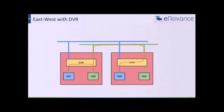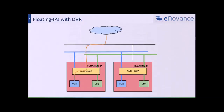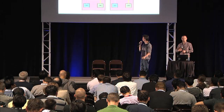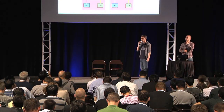With DVR, a DVR instance is started on each compute node, so the traffic will go through each instance of the DVR locally — we no longer need to go through the L3 node for east-west traffic. For north-south traffic, when a floating IP is associated with a VM, the floating IP will be scheduled on the compute node hosting that VM. Same as before — no need to go through the L3 agent anymore.